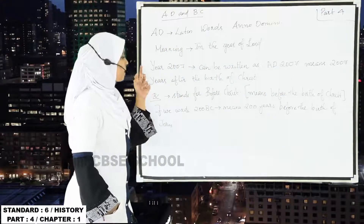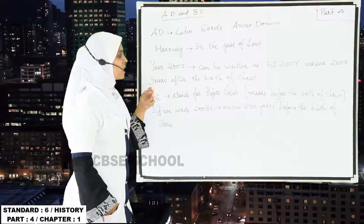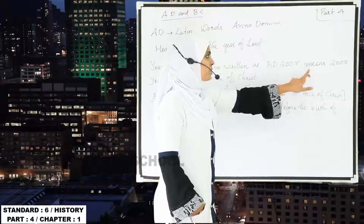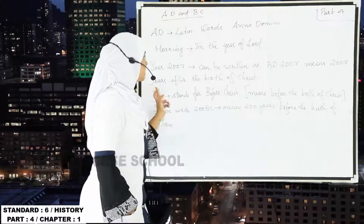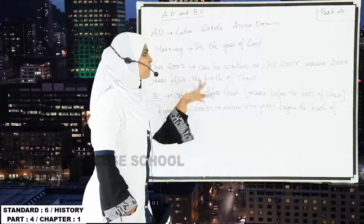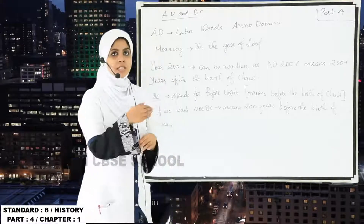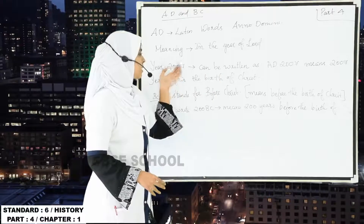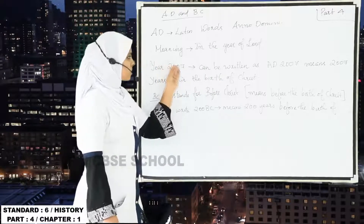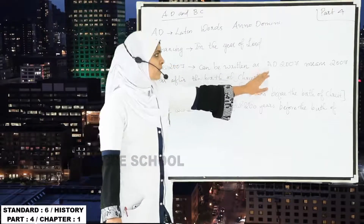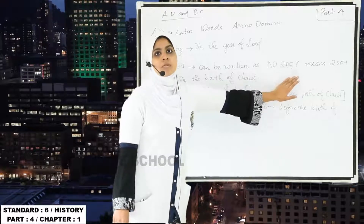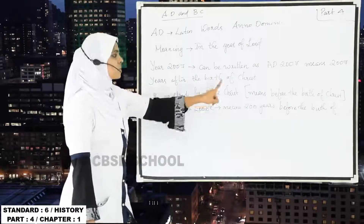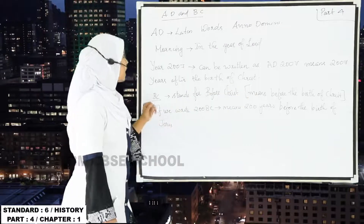If we are writing the year 2007, we can simply write it also as AD 2007, which means 2007 years after the birth of Christ. Writing just 2007 is equal to AD 2007, meaning 2007 years after the birth of Christ.